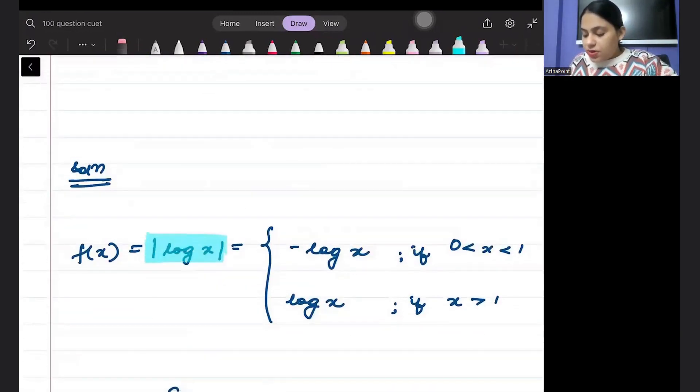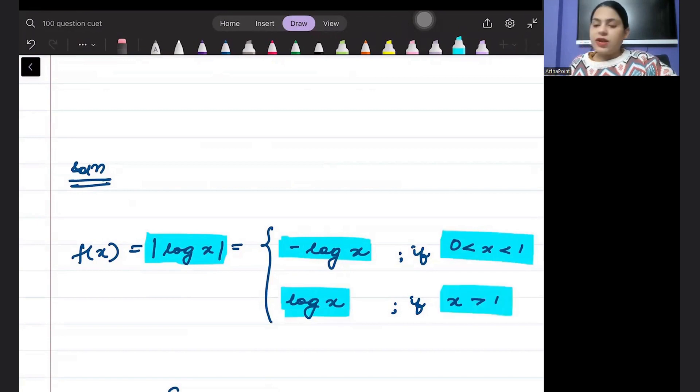So I've just opened up this mod and said that |log x| will be minus log x and log x. It will be minus log x when x is between 0 to 1 and it will be log x when x is greater than 1.